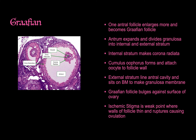The Graafian follicle is the largest and most mature follicle. Its antrum divides into an internal stratum and an external stratum. The internal stratum forms the corona radiata, and there is also a cumulus oophorus — a fuzzy layer on the outside of the oocyte — that attaches the oocyte to the follicular wall. The external stratum lines the antral cavity, sitting on the basement membrane to form the granulosa membrane.